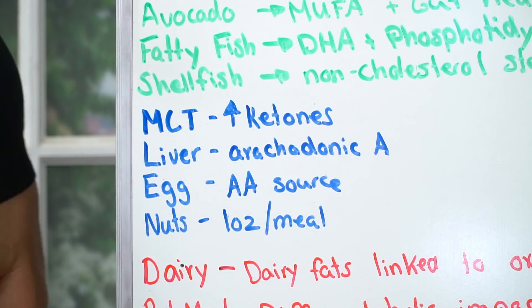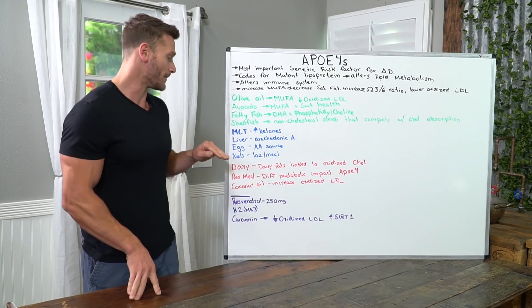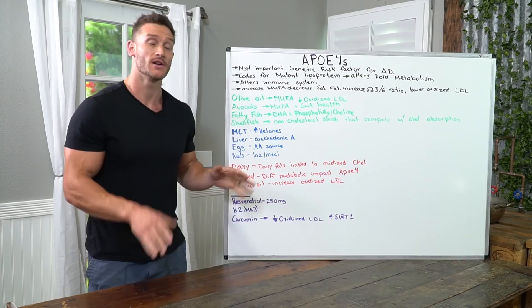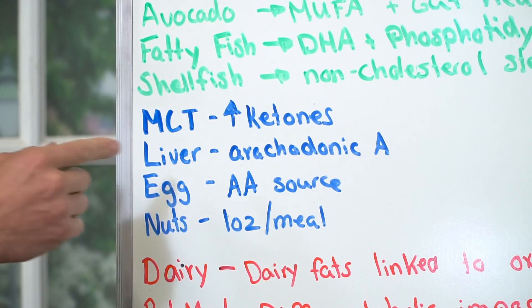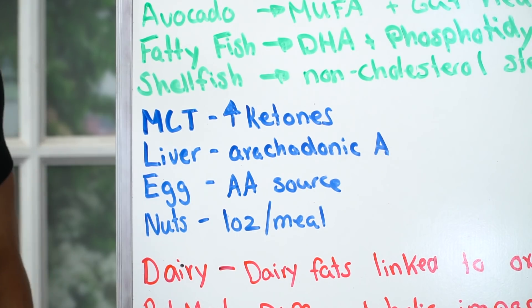Liver, high levels of arachidonic acid. So that's going to protect the brain. So if you can eat liver, go for it. Egg, also high levels of arachidonic acid, but also can be inflammatory. So cage-free, pasture-raised only. Nuts, limit it to one ounce per meal. No more than that. Period. Weigh it out.